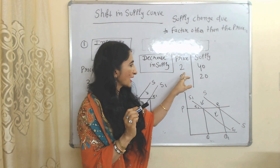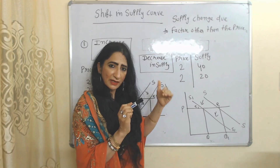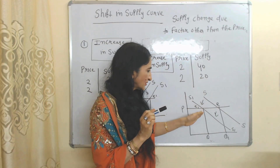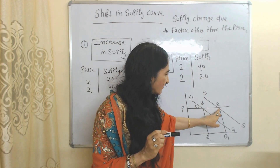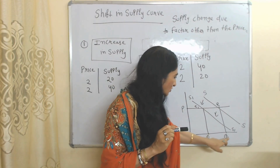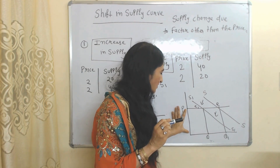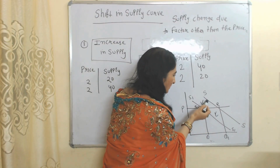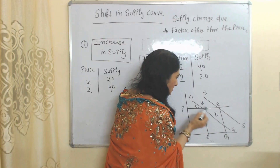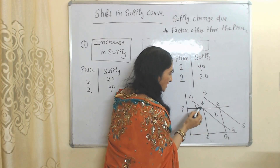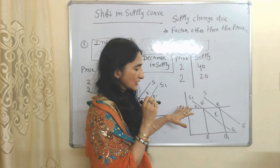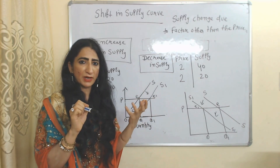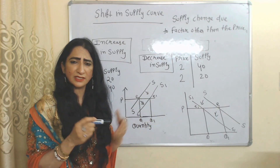Decrease in supply means price is constant but still supply reduces. As you can see, price is constant but supply reduces from 40 to 20. In the diagram, the initial equilibrium point is E, initial quantity is OQ1, and price is OP. Price remains constant, but still supply reduces. As supply reduces, the supply curve shifts backward from SS to SS1, which is our new supply curve, and E1 is our new equilibrium point. Supply reduced because it was influenced by some other factor, not price.